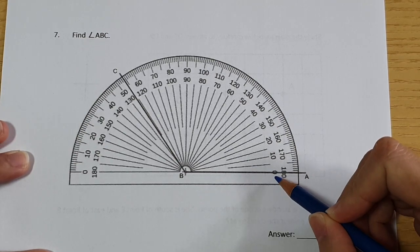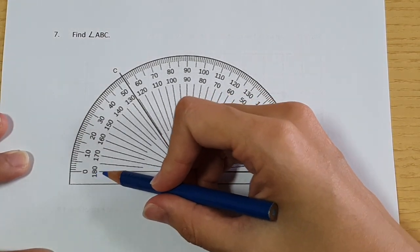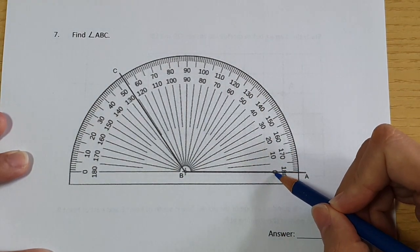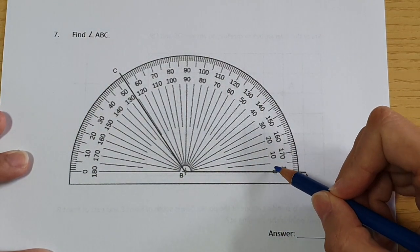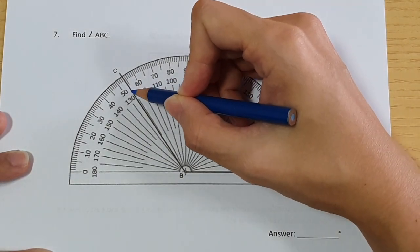We're going to look for the zero that is on top of the line. So it's this side and not the other side. We start from the zero here and then we start going from here until the other line. The other line is here.